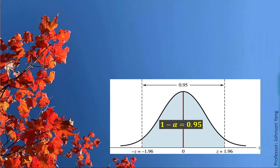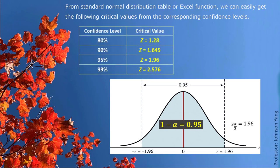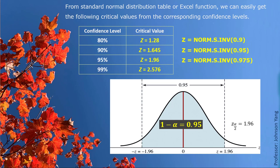From the chart, we can see how the confidence level takes the center area around 0 based on the standard normal distribution. From the standard normal distribution table or Excel function, we can find typical confidence levels and corresponding critical values. For 80% confidence level, we apply cumulative probability of 90%; for 90% confidence level, cumulative probability is 95%; and similarly for 95% and 99% confidence levels.